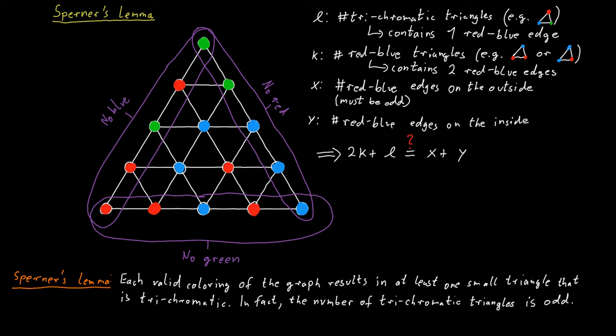We have counted all red-blue edges that lie on the inside of the large triangle twice. Because those edges that lie on the inside, they touch two different small triangles. So we would count them once for one triangle and then again for the other triangle.